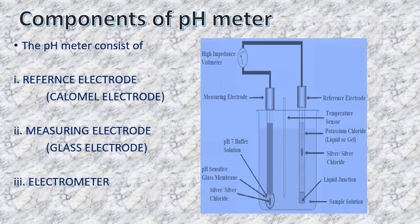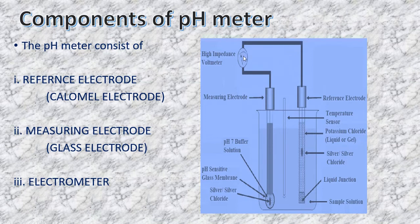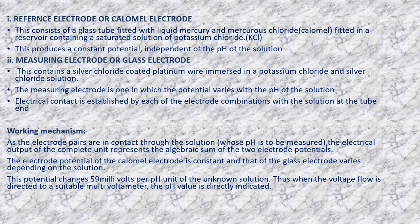The reference electrode is the calomel electrode tube, and the second component is the measuring electrode, also called the glass rod electrode. The pH meter is essentially fitted with a pair of electrodes connected to a meter scale. The pH value of a solution is determined by measuring the direct current voltage produced between these two electrodes when they are immersed in the solution.